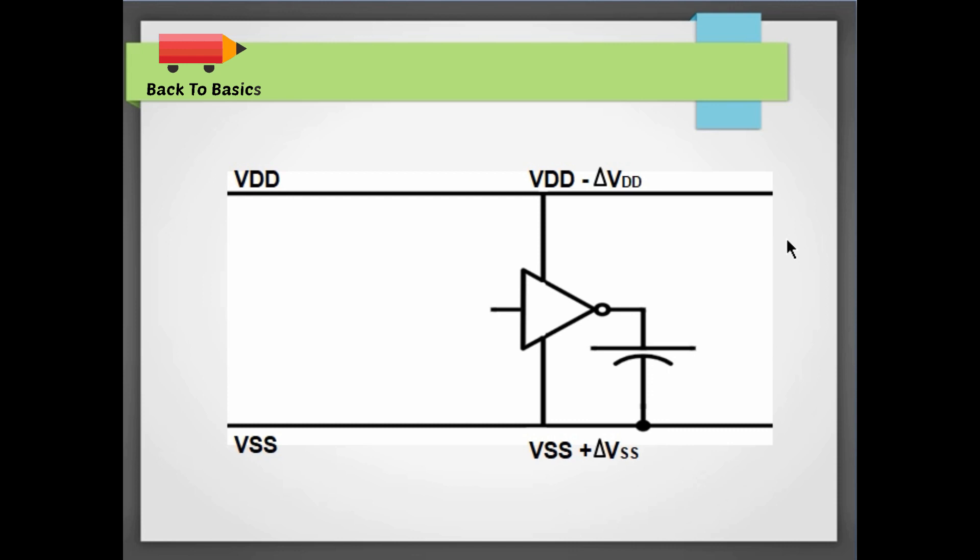Now you must be thinking what will be the value of this delta VDD and this delta VSS. So let me tell you, these power and ground rails are nothing but wires and they have certain resistance and certain inductance. And as we know, voltage is also the current multiplied by resistance, and voltage is also inductance into di by dt.